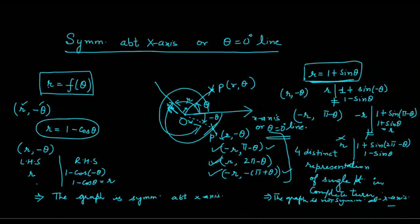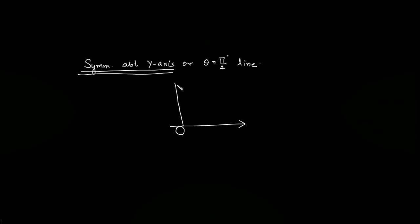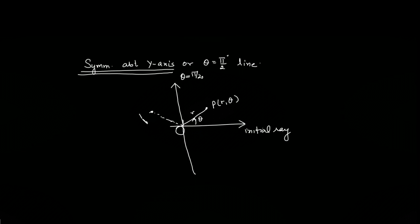Similarly, we will check the symmetry about the y-axis, or the theta equals π/2 line. This is our initial ray, this is the pole, and this is the theta = π/2 line, or the y-axis. If any point P lying on the graph has coordinates (r, θ), and P' also satisfies the graph, then we say our graph is symmetrical about the y-axis. Now, the coordinates of P': we can move angle pi minus theta and cover distance r, giving coordinates (r, π − θ).